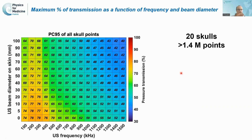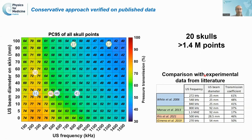To compare with available literature data, we found papers measuring the transmission coefficient at different frequencies with a given ultrasound beam diameter. We find the same tendency: transmission is higher for low frequencies and for smaller transducers. The experimental values from the literature are actually lower than our estimates, which is consistent with our conservative approach providing an upper bound on the maximum transmission through the skull.